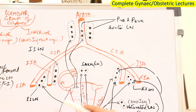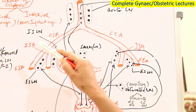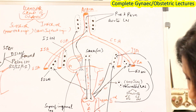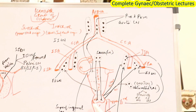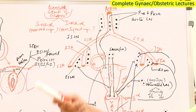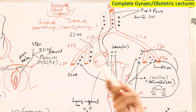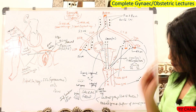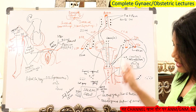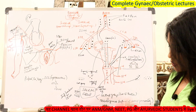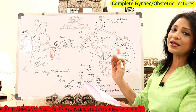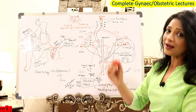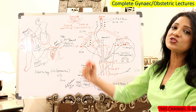Now, what are sacral lymph nodes? The posterior vaginal lymphatic drainage, along the utero-sacral ligament or posterior part of the cervix, is drained into sacral lymph nodes. Sacral lymph nodes basically lie on either side of the rectum. They receive drainage from the lymphatics of cervix, uterus, and upper third of the vagina.